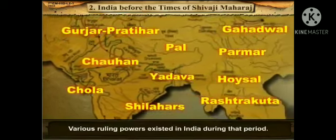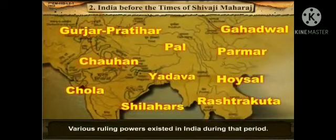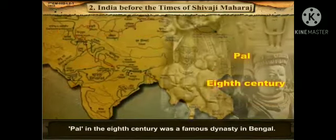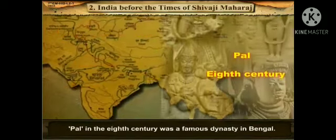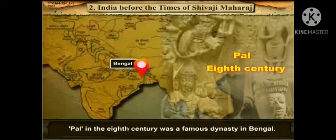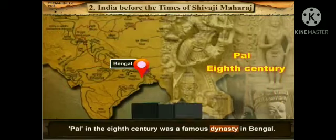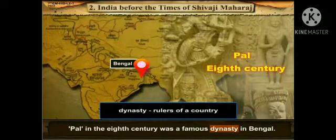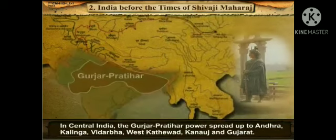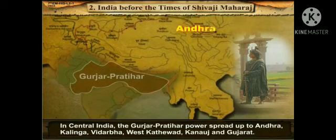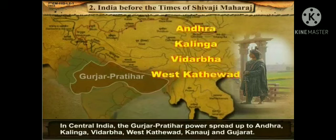Various ruling powers existed in India during that period. The Pal dynasty in the 8th century was a famous dynasty in Bengal. Dynasty means rulers of a country. In central India, the Gurjar Pratihar powers spread up to Andhra, Kalinga, Vidarbha, West Kathiawar, Kanuj and Gujarat.